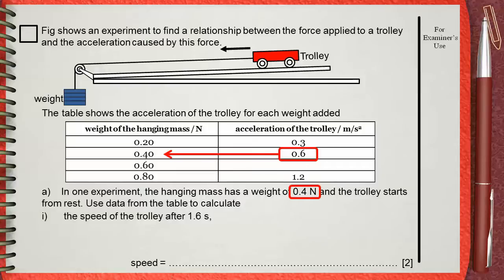It's clear that this question has no graphs. So, let's find out our givens. The first given in the question is that the acceleration is 0.6 meters per second square. Also, you have another given here.